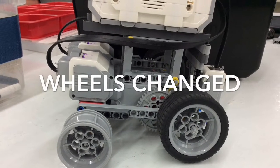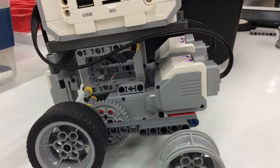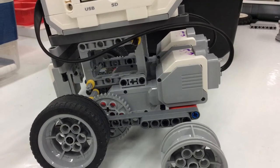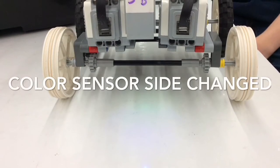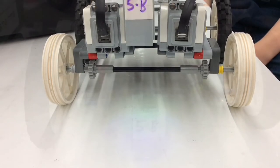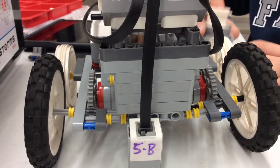So here we have changed the wheels from the white ones to the gray ones. As you can see here, we changed the color sensor from one side to the other and brought it down because it couldn't see the color black when it went over it during the drag race.